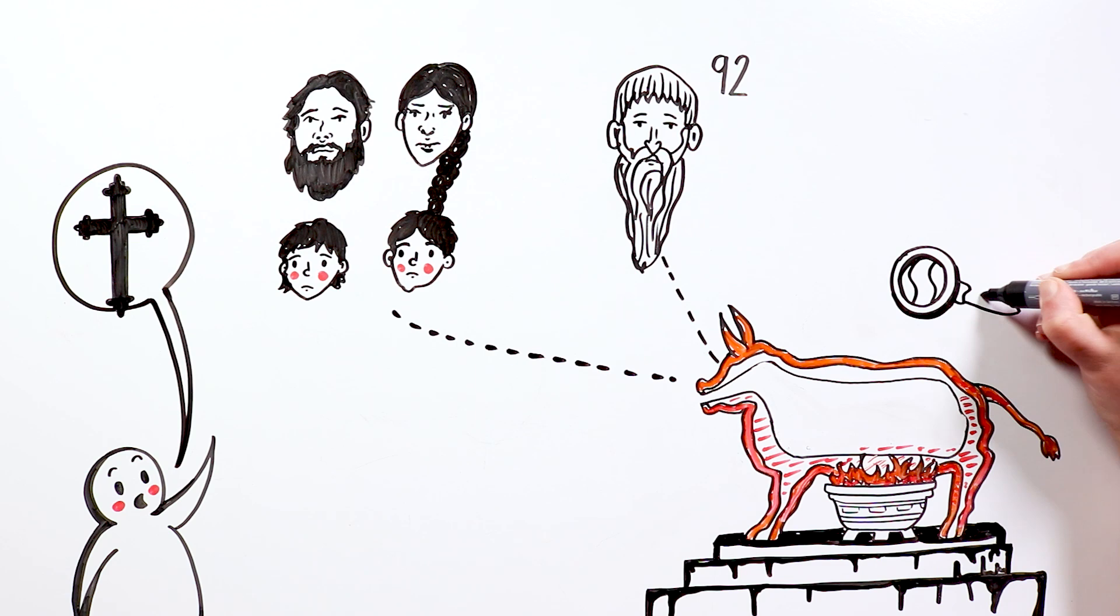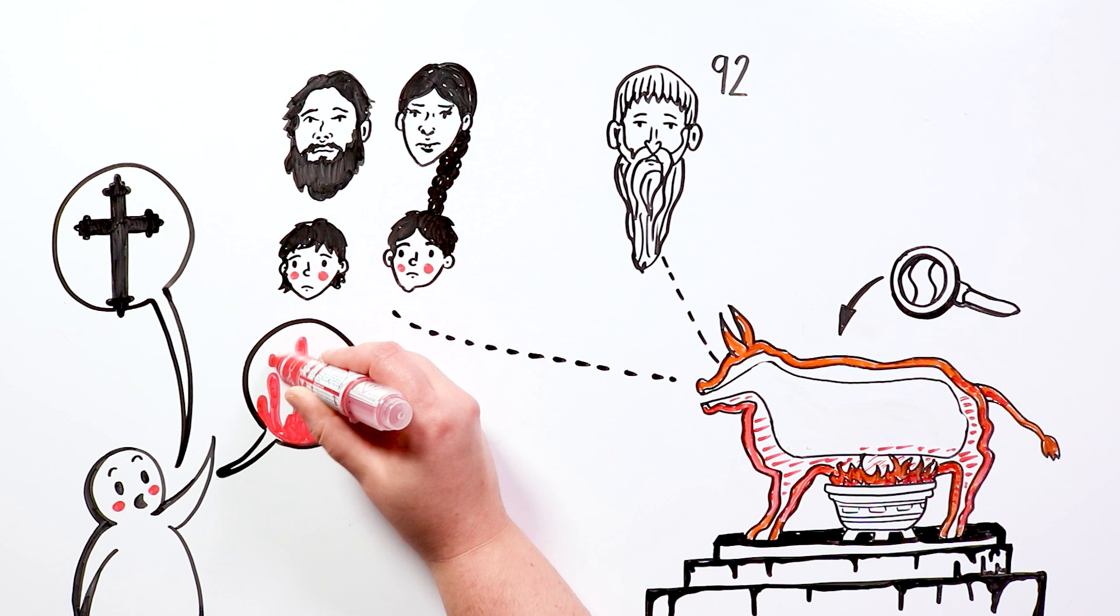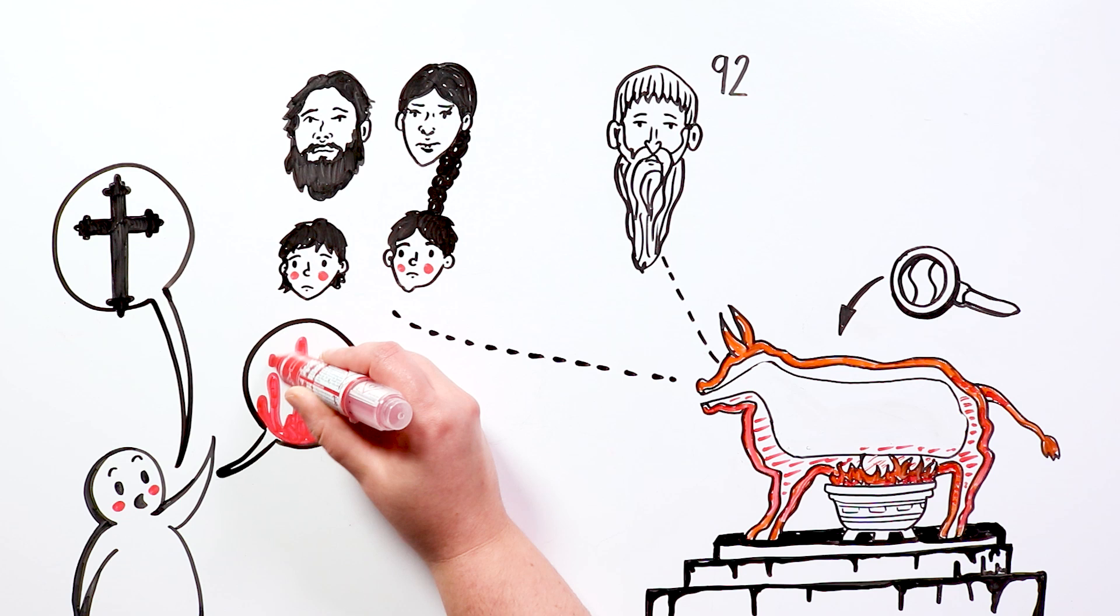In some museums dedicated to the instruments of torture in history, you can find reproductions of this bull, which gives us an idea of the worst side of the human being, and how far the creative imagination could go to create terror and pain.